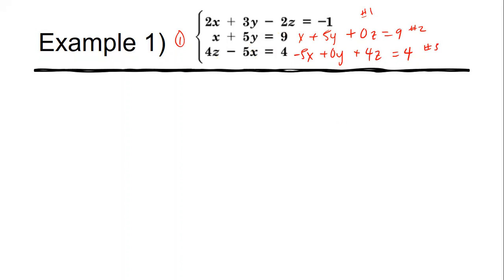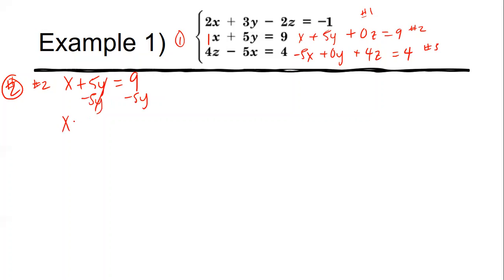Step two: choose the equation that makes it easiest to isolate a variable. Looking at our options, equation 2 is easiest because x has a coefficient of one. We'll use equation 2: x + 5y = 9. To isolate x, subtract 5y from both sides, giving us x = 9 − 5y. That is step two.